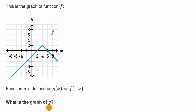On Khan Academy it's multiple choice, but for the sake of this video it'd be fun to think about what g would look like without any choices, just sketching it out. So pause this video and try to think about it, at least in your head. Now let's work through this together. So g of x is equal to f of negative x.